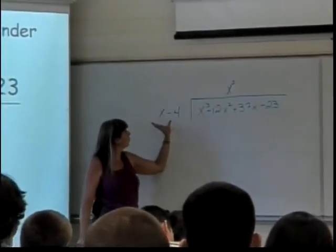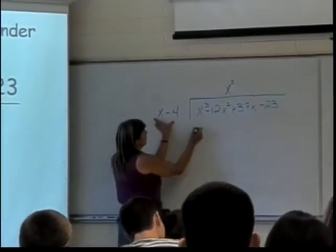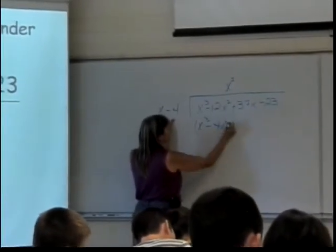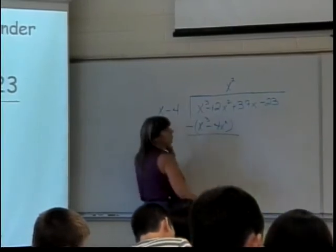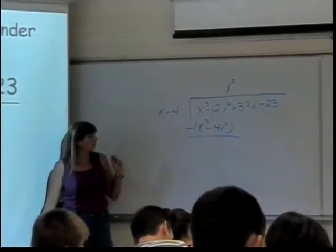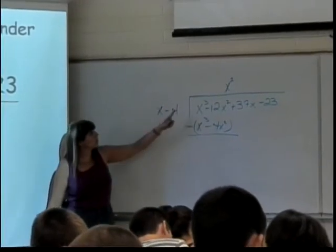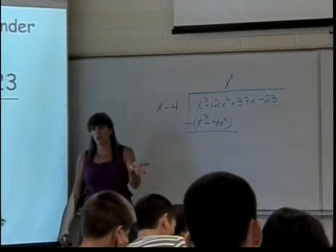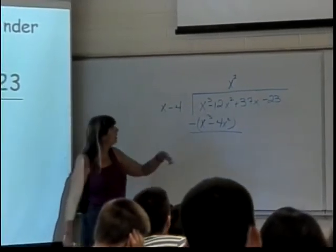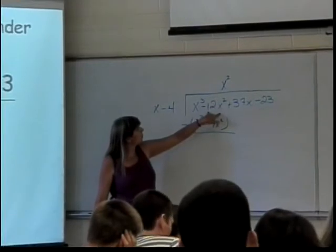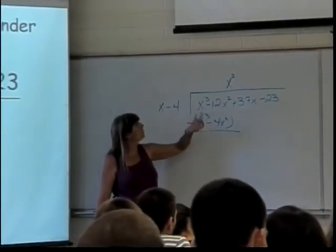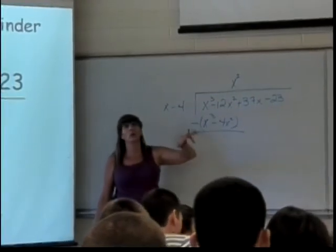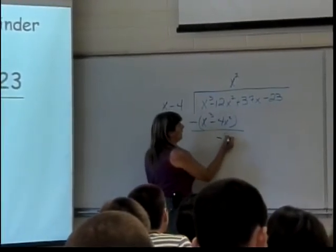And then we multiply our X squared times the divisor. And when we do that, we get X cubed minus 4X squared. And just like with regular long division, we subtract that off. So when I subtract X cubed minus the X cubed, I get zero. And if I didn't get that, I've done something wrong. I have negative 12X squared minus the negative 4X squared, which is the same thing as negative 12X squared plus 4X squared, which is negative 8X squared.